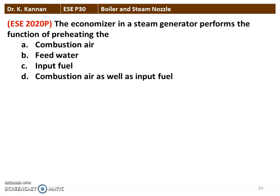The next question from the 2020 question paper: the economizer in a steam generator performs the function of preheating. The economizer is used to preheat the feed water, so feed water is the correct answer. The economizer, superheater, and air preheater are the three accessories. The economizer is used to heat the feed water.